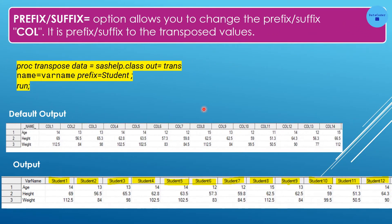The second option is PREFIX= or SUFFIX=. This allows you to change the prefix or suffix of the transposed column variable names. For example, using PREFIX=Student, Column1, Column2, Column3 become Student1, Student2, Student3. If we use SUFFIX=Student instead, the names become 1Student, 2Student, 3Student — the suffix is added after the number.